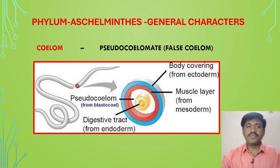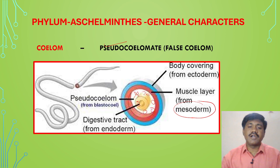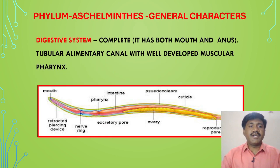What about the body cavity? A pseudocoelomic cavity is present, meaning there is no true body cavity — the body cavity is a false body cavity. This is because the mesoderm layer forms pouch-like structures between the body wall and the digestive gut. That is why it is called pseudocoelom or false cavity.